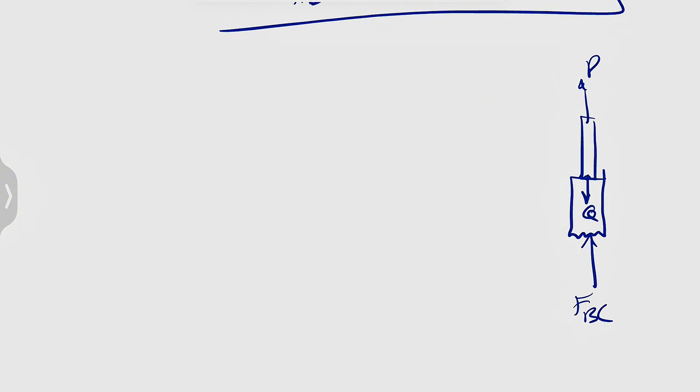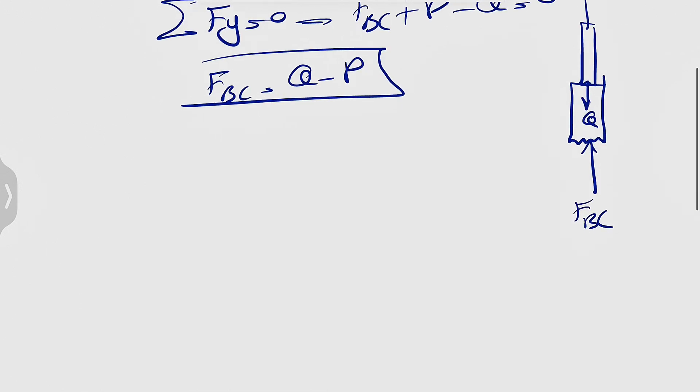Since we are in equilibrium, for finding FBC, we can do sum of all forces in Y equals zero. Very simple. We're going to have FBC plus P minus Q equals zero. So the FBC, or the force that we have in member BC, is basically Q minus P. Now that we have this force,